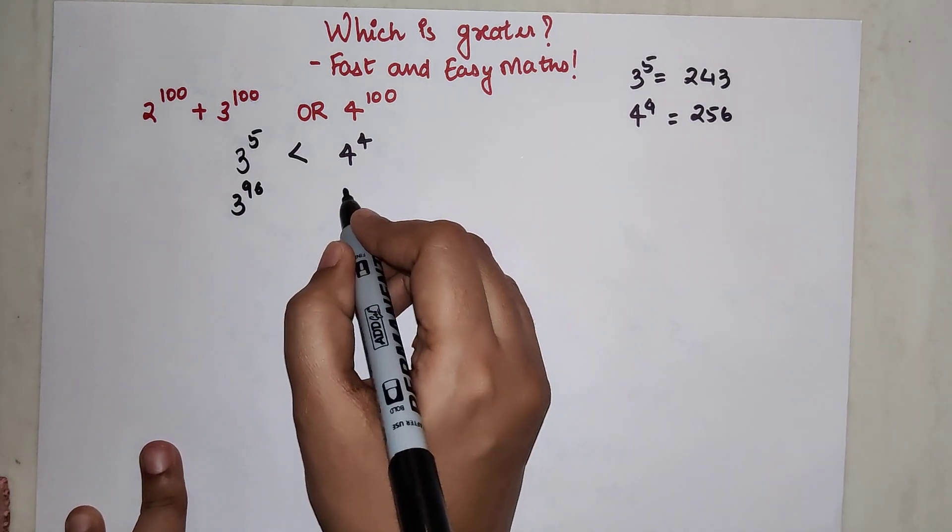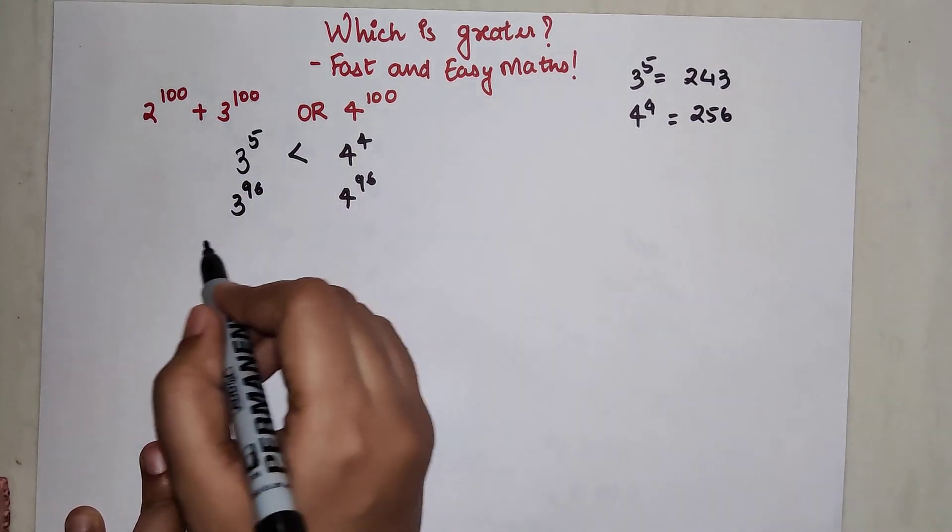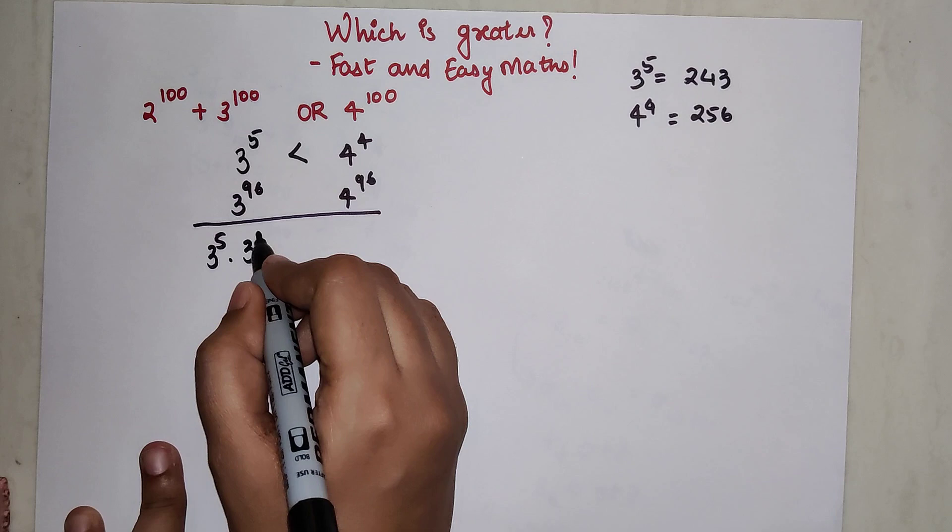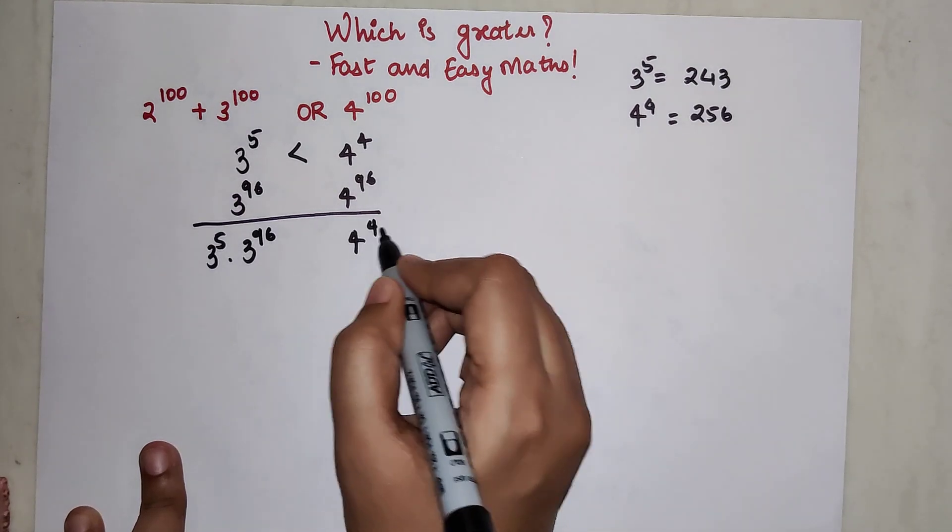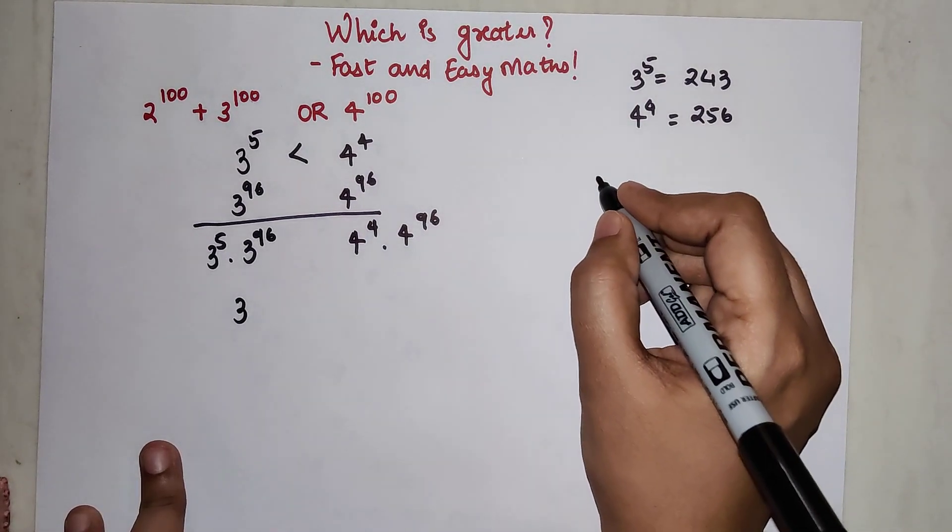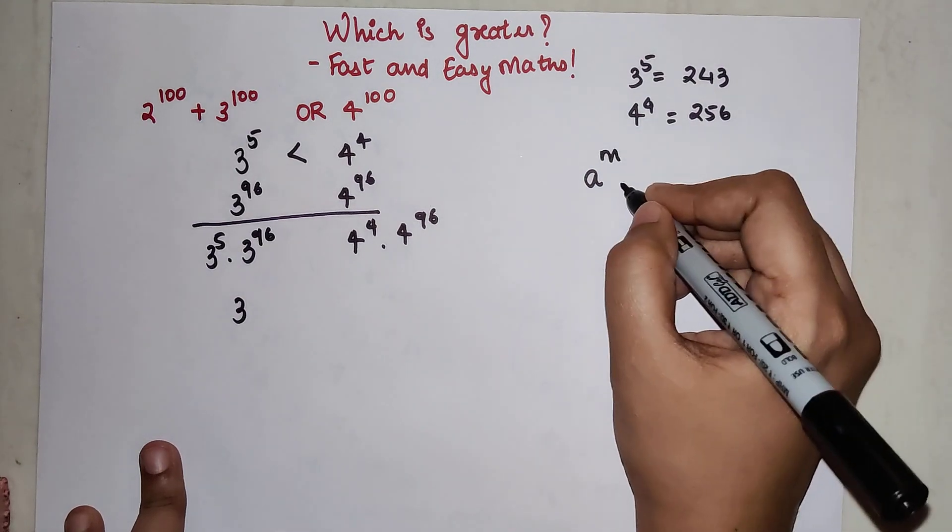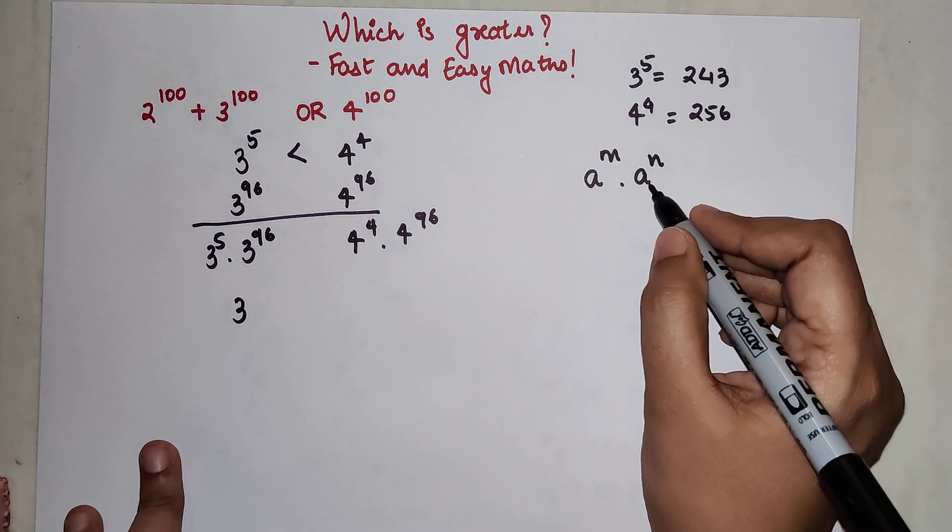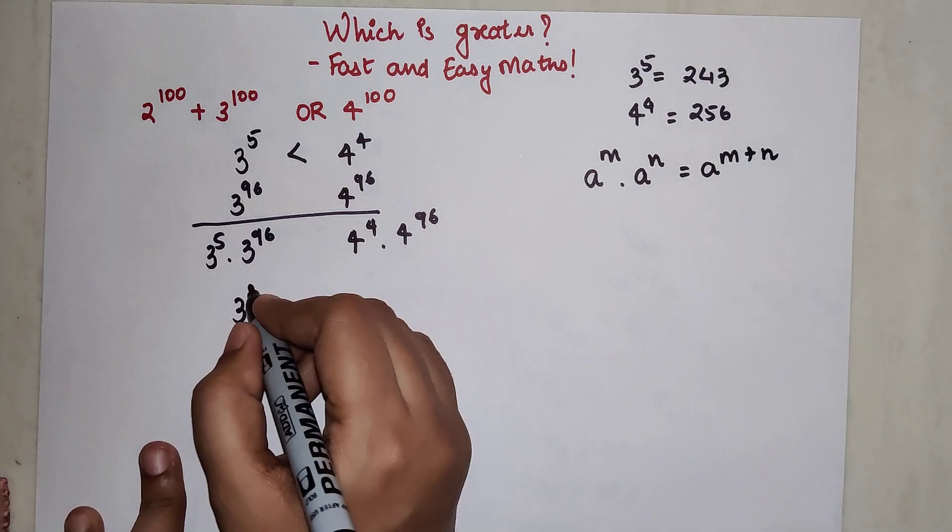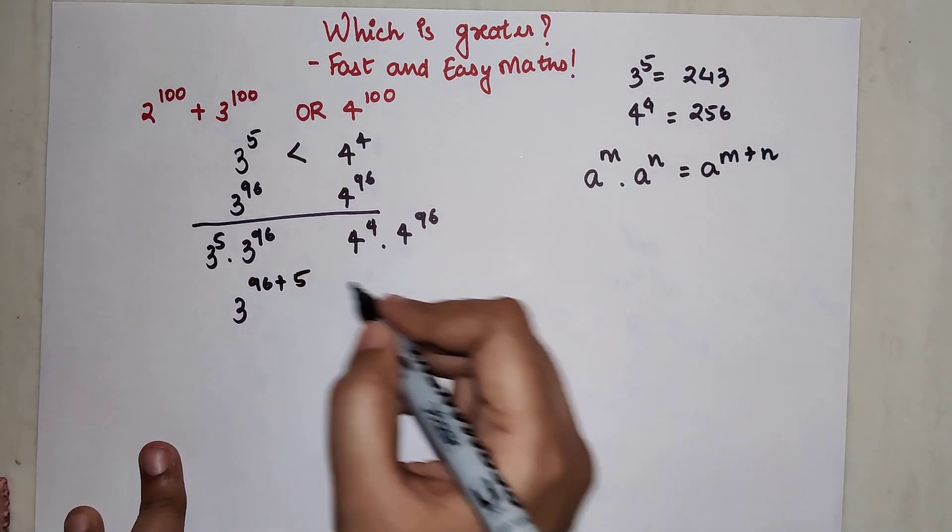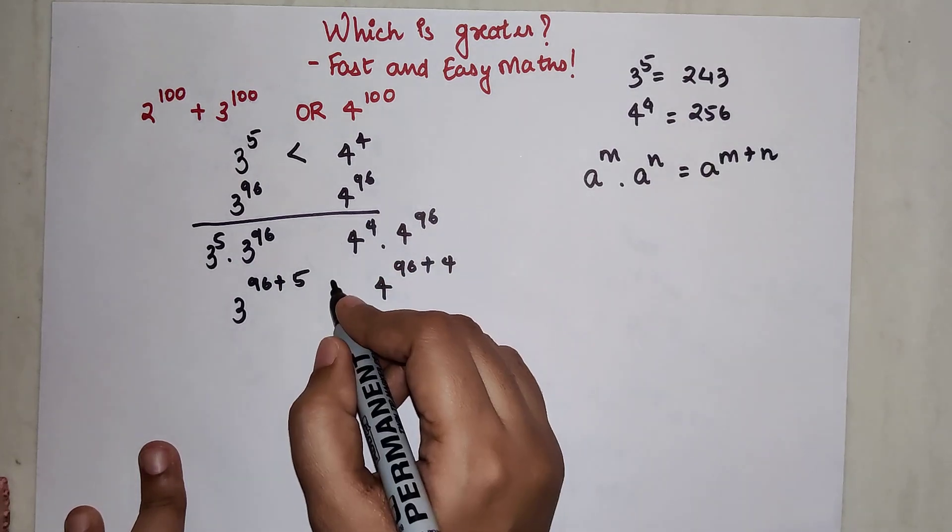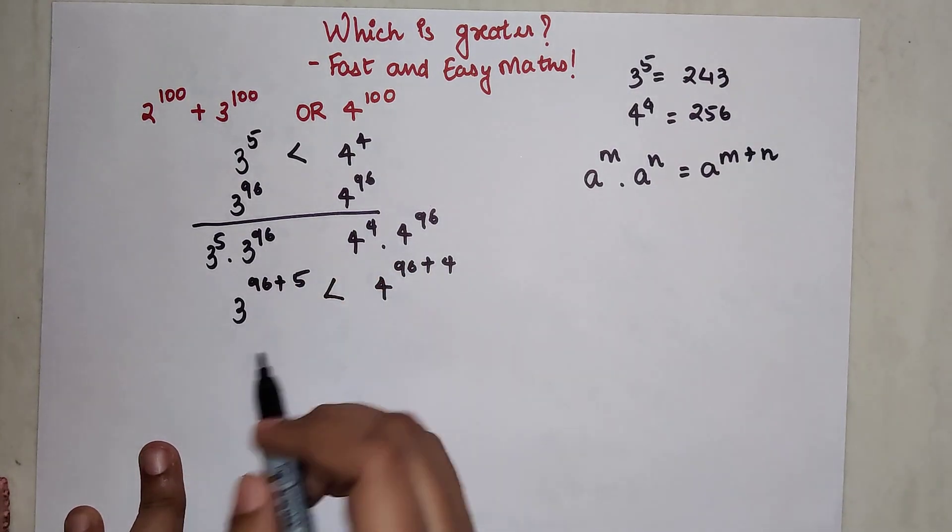Now let's write 3^96 and 4^96 and multiply both of them. When you multiply, we get 3^5 × 3^96 and 4^4 × 4^96. Whenever you have the same base with different index multiplied with each other, means a^m multiplied by a^n, your answer becomes a^(m+n). So this becomes 3^(96+5) and 4^(96+4).